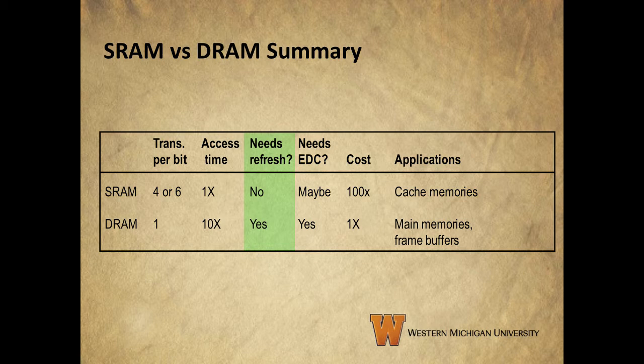The needs refresh column shows us that the values stored in SRAM are stable and don't need to be rewritten periodically. In the case of DRAM the values stored are not persistent and need to be refreshed periodically by reading out every bit stored in memory and then writing it all back in. EDC stands for error detecting code and applies to finding errors in cache memories and what to do when we find those errors. DRAM requires EDC and SRAM may or may not. We'll cover more on this later in the course.